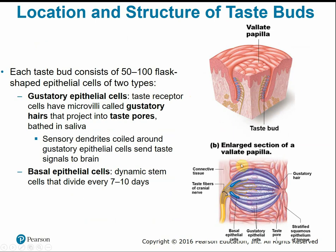The gustatory epithelial cells are our taste receptor cells. They have microvilli called gustatory hairs that project into the taste pores. When you taste something, it dissolves in saliva and diffuses into the taste pores where it contacts the gustatory hairs. Near the base of the taste bud, sensory neurons connected to the epithelial cells send those taste signals to the brain.